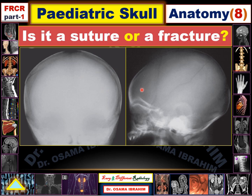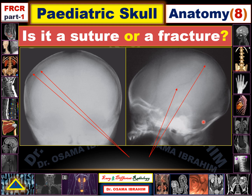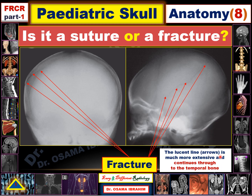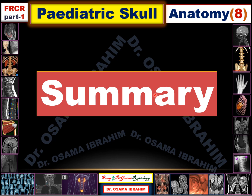The last question: is it a suture or a fracture? In both the lateral and Towne's views, a lucent line is seen extending through the parietal bone. However, this line extends down to reach the temporal bone as well. Because the lucent line is much more extensive and continuous through to the temporal bone, it is considered a fracture, not a suture.